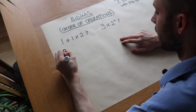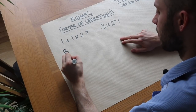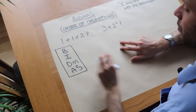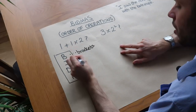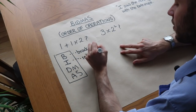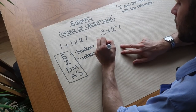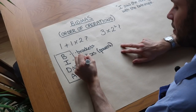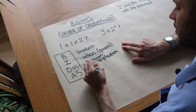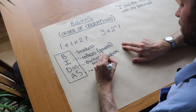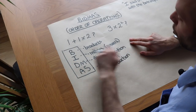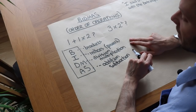BIDMAS is written like this: B, I, D, M, A, S. The different letters stand for: B is brackets, I is indices — that's a fancy way of saying powers, like squared, cubed, etc. D and M stand for division and multiplication. And A and S stand for addition and subtraction. This is basically an ordered list which tells us what order we do things in a mathematical expression.